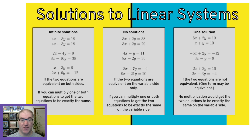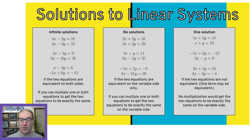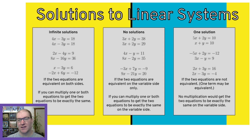Getting one solution means we were getting a point with an x and a y, which is the place where the two graphs intersected, or the values for x and y that would work in both equations. We've been doing linear systems with one solution, and on the screen in that one solution box I have three examples of equations we've been solving.